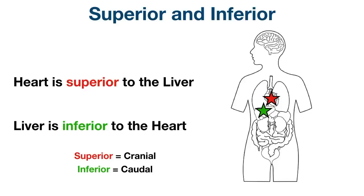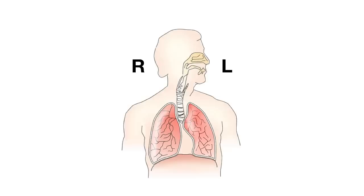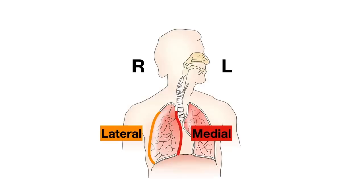You can also use these terms to describe different sides of a structure. For example, if we look at the right lung, the lateral aspect is toward the side of the body and the medial aspect is toward the midline. The superior aspect is the upper portion toward the head and the inferior aspect is toward the floor away from the head.